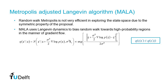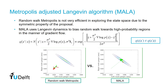MALA biases random walks towards high probability regions in the manner of a gradient flow. In the animation shown here, compared to Random Walk Metropolis, MALA converges faster towards the center and moves more efficiently over the entire state space.